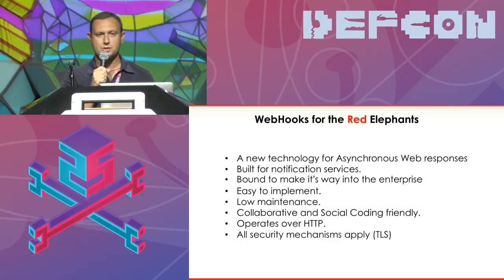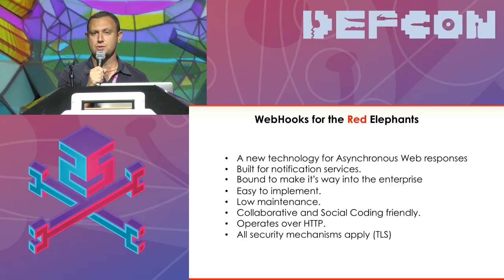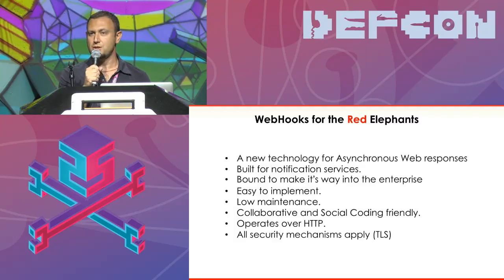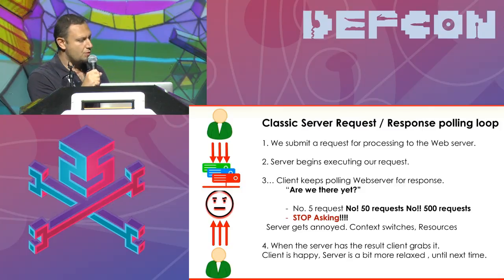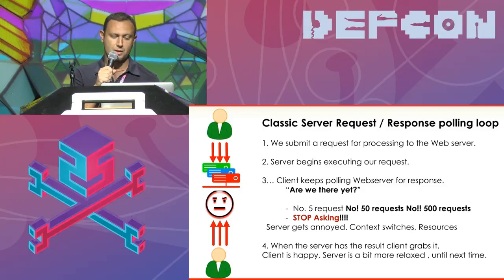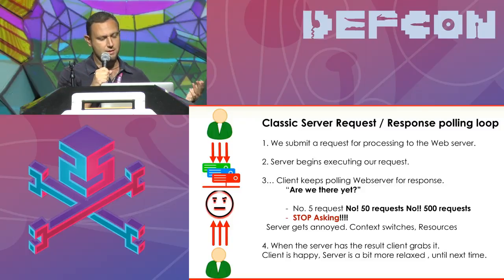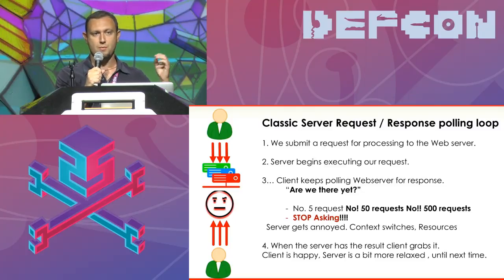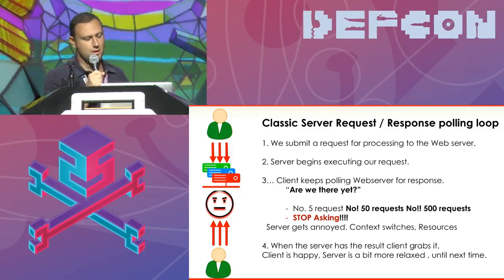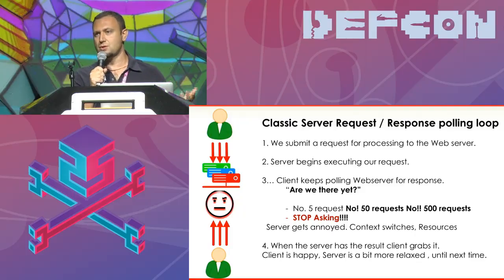Let's step back and talk about the technology we're going to use to achieve our goal: webhooks. Webhooks is a technology for asynchronous web responses. It is historically built for notification services, it's easy to implement, it is low maintenance, and it works over HTTP — and therefore we can use it for our content proxy. The classic server request-response polling loop is that we normally submit a request for processing to a web server, the server begins executing, and then we keep polling the server asking 'are we there yet?' five or ten times. The server naturally gets annoyed — there are context switches, resource consumption, and depending on the case even a throttling mechanism.